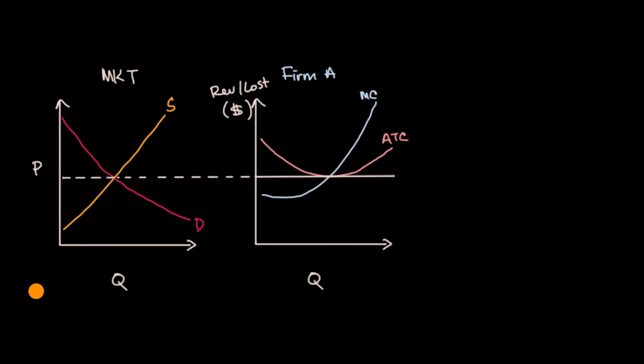Now in previous videos, we talked about that in the long run, in a perfectly competitive market, the firms are going to be operating at zero economic profit. And you see that example right over here.